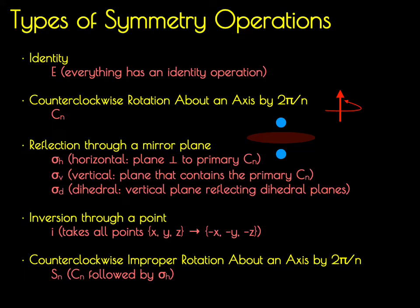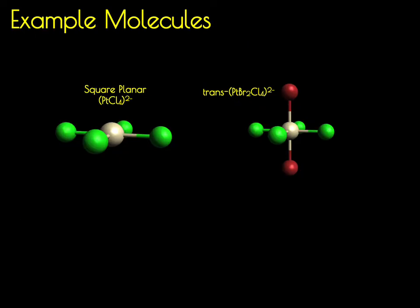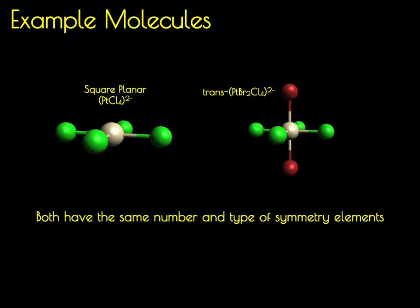What we're now going to do is go through and explore all of these different symmetry operations. We're going to use two molecules as our primary examples: square planar platinum tetrachloride and the six-coordinate platinum BR2Cl4 molecule. The reason we're using these two is that they have identical symmetries — both have the same number and type of symmetry elements. It's just that some of the symmetry operations are a little bit easier to visualize with the six-coordinate species.